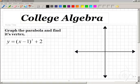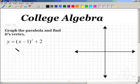To graph the parabola and find the vertex of the equation y equals x minus 1 squared plus 2, we'll first compare this to the standard form of a parabola, which is y equals a times x minus h squared plus k.